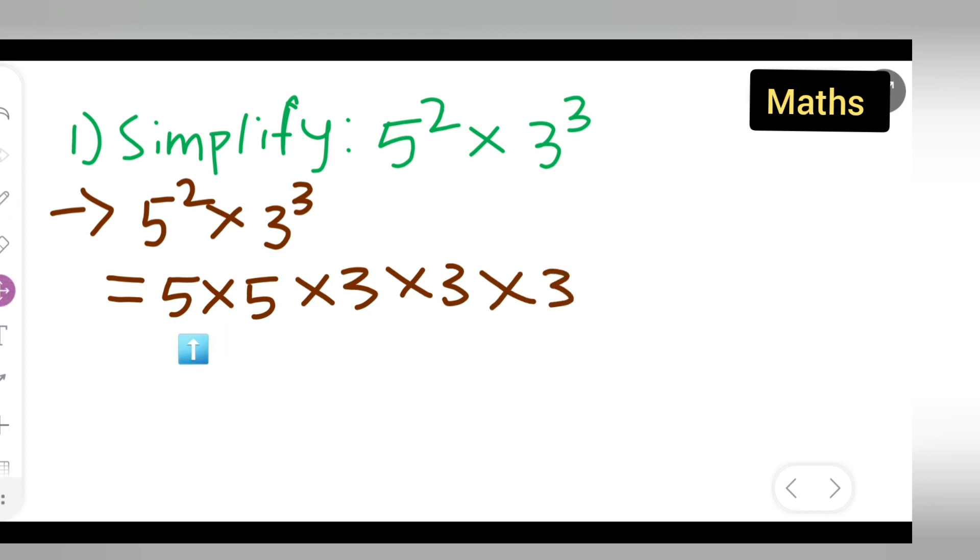Write down 5 times 5. Your answer will be 25. Write down 25 over here. It is equal to 25 multiplied by 3 times 3 is 9, 9 times 3 is 27. Write down 27.